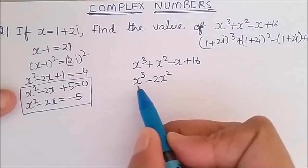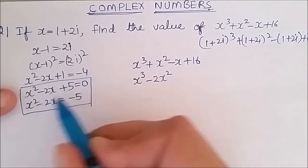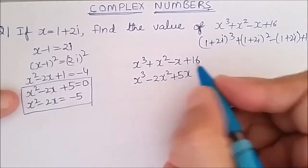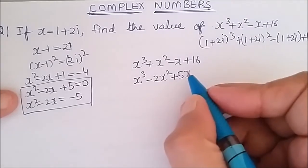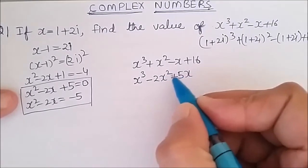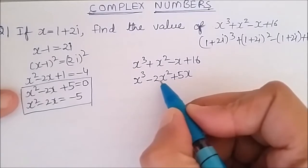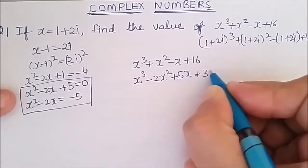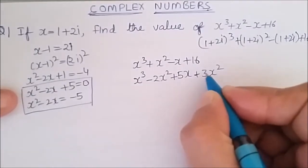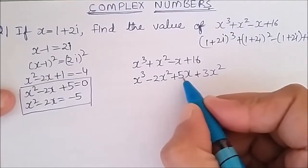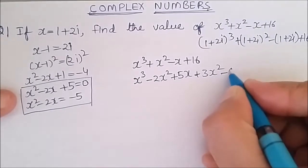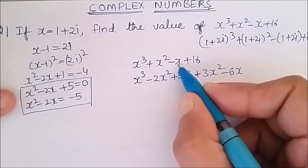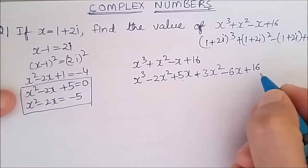If I take x out of x square minus 2x I get minus 2x. Similarly I want 5x here, so I write plus 5x. But in mathematics we cannot add or subtract freely, so we need to balance this. I have written minus 2x square, so to balance I write plus 3x square, because minus 2x square plus 3x square equals x square. Similarly, plus 5x is here, so I write minus 6x to balance, and plus 5x minus 6x becomes minus x. Now I have plus 16.